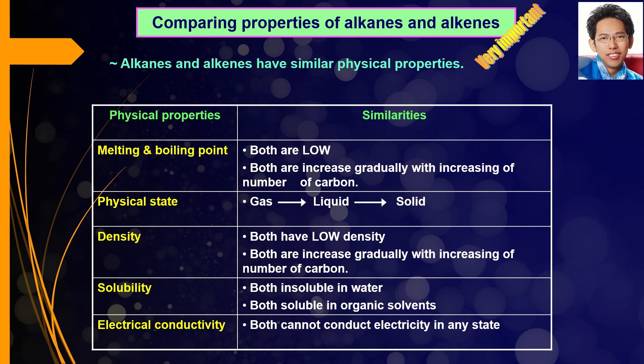For physical properties, in terms of melting and boiling points, both are very low. Both alkanes and alkenes have very low melting and boiling points, and both are increased gradually with increasing number of carbons.